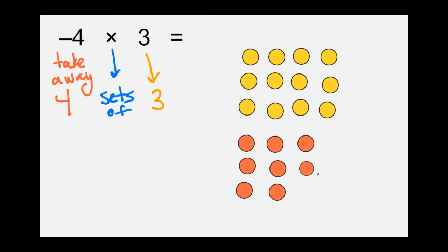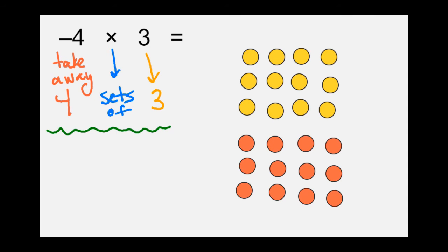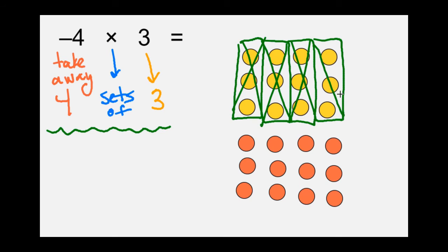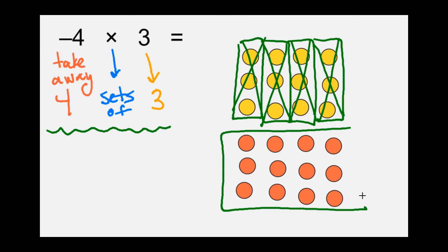Just remember, if this is your first time watching, you're watching to see what I'm doing first, then you'll fill in your notes the second time. I've now modeled four sets of negative 3. The problem tells us to take away four sets of positive 3. So we cross out each set — one, two, three, four. Whatever we're left with is our answer: negative 12.